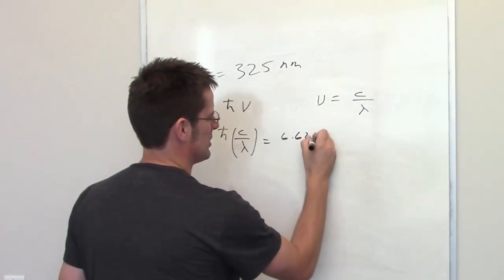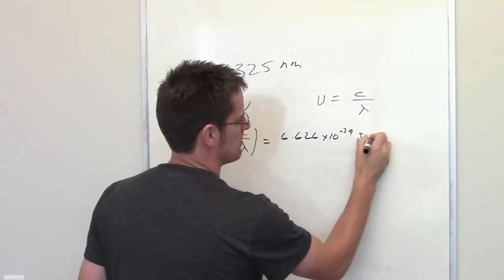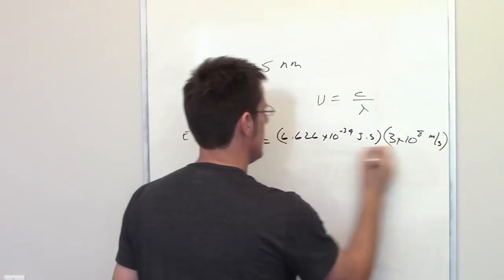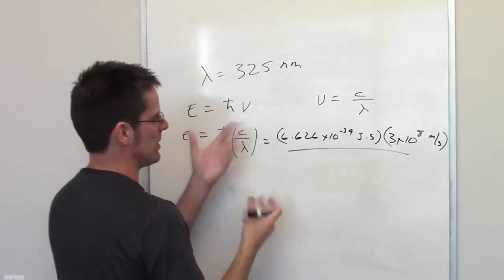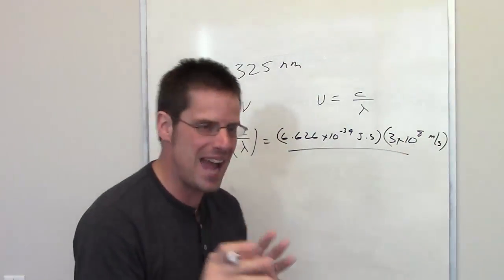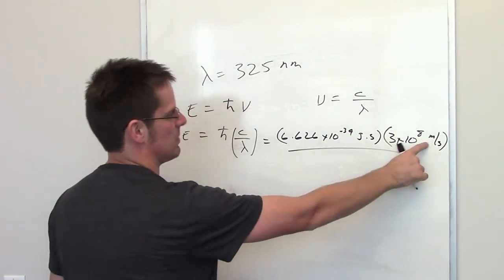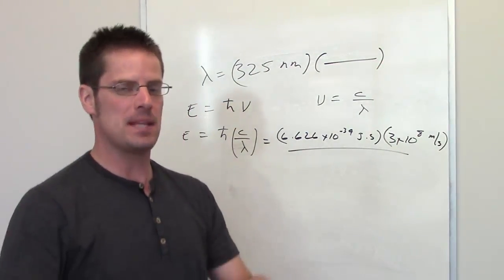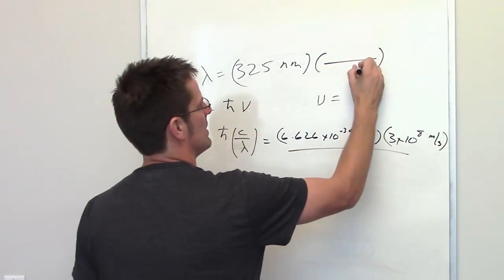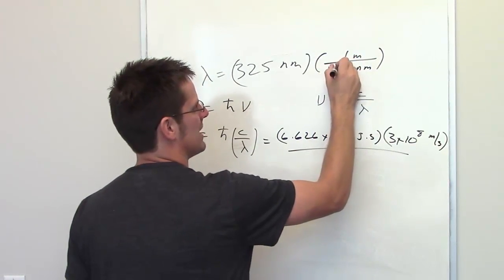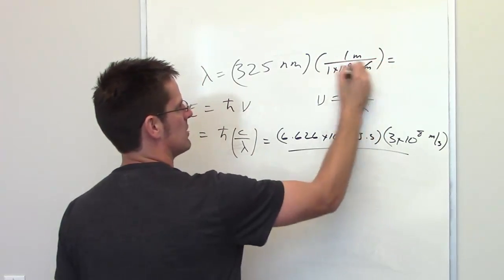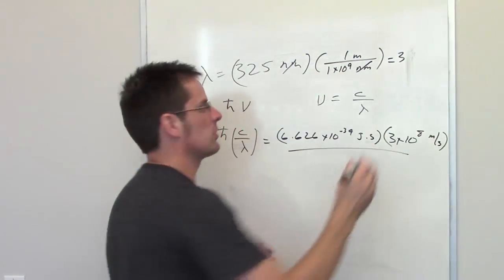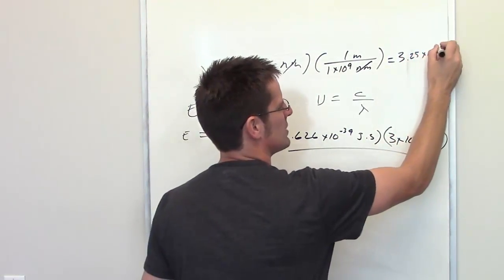Planck's constant is 6.626 times 10 to the negative 34th joules times seconds, multiplied by the speed of light — 3 times 10 to the 8th meters per second — divided by wavelength. Wavelength is given as 325 nanometers, but I need to convert to meters. Taking 325 nanometers and using the fact that 1 meter equals 1 times 10 to the 9th nanometers, the nanometers cancel and 325 nanometers equals 3.25 times 10 to the negative 7th meters.